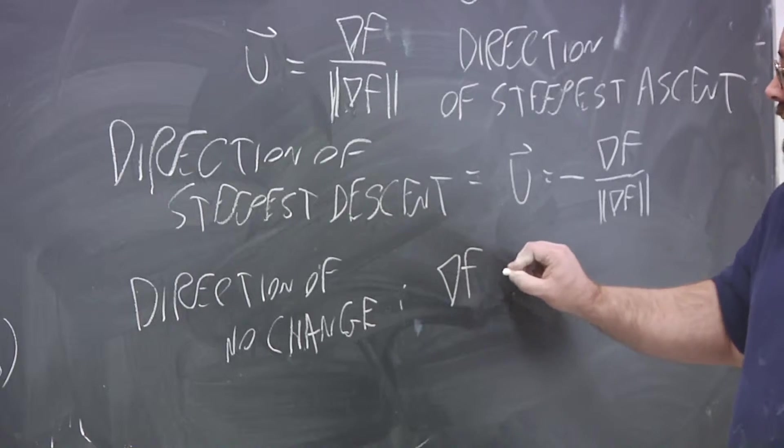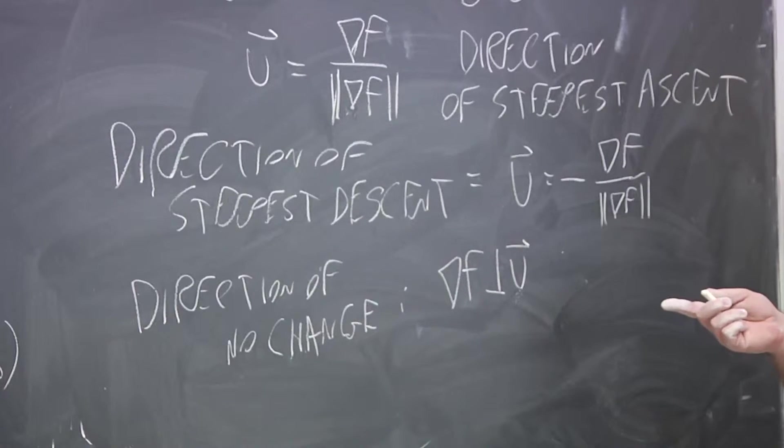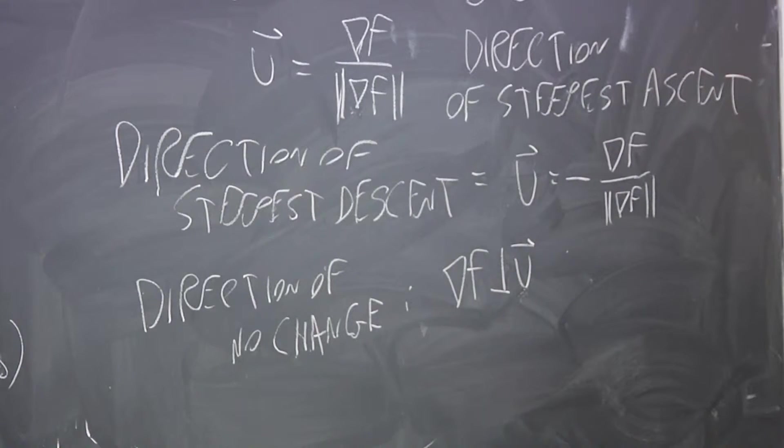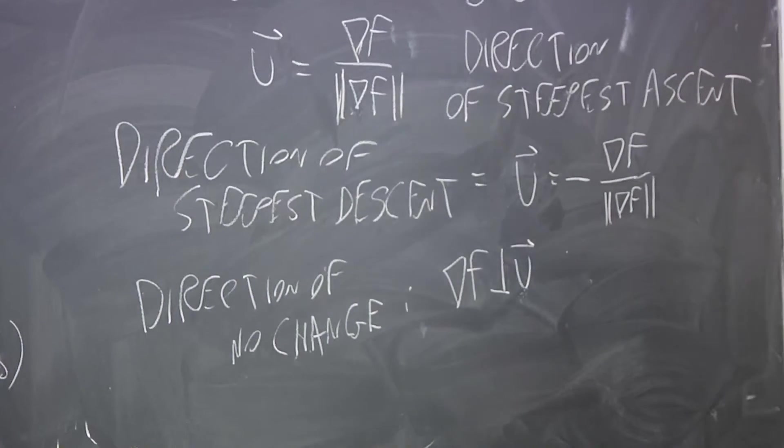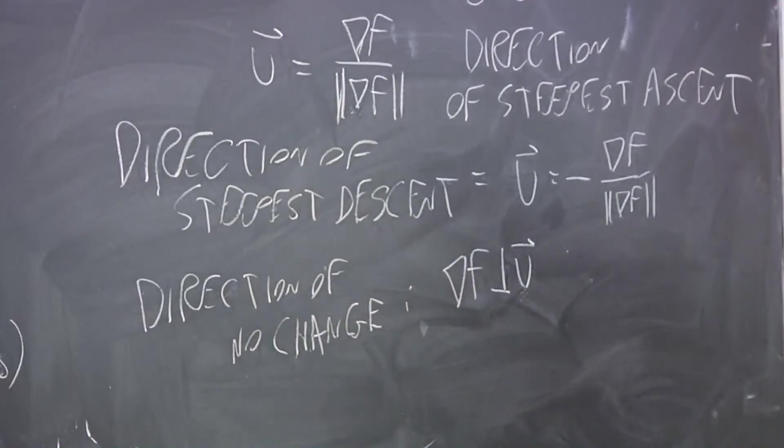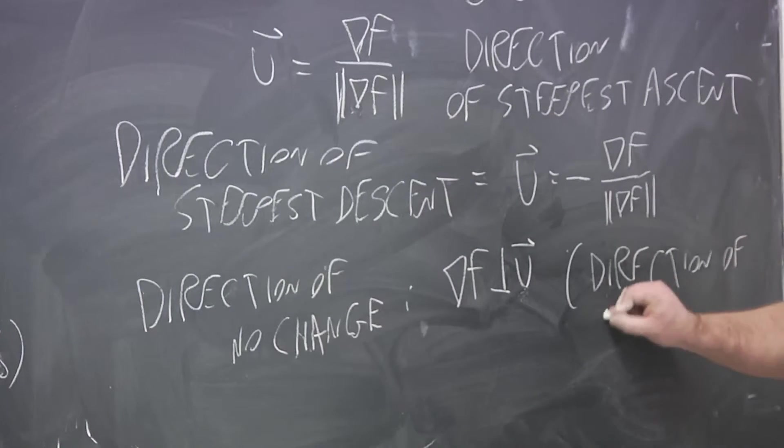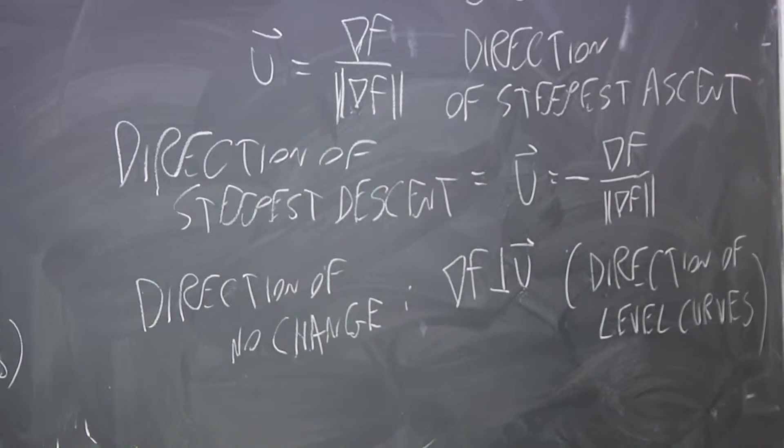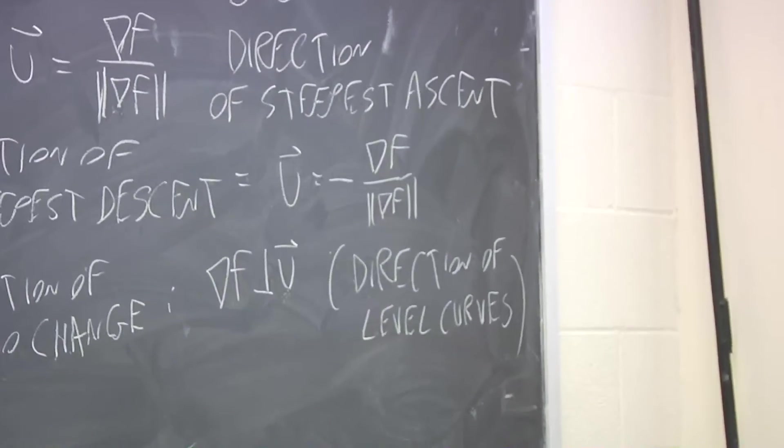So, in other words, if the gradient and u are perpendicular to one another. So, in two dimensions, there's going to be two vectors that are pointing in opposite directions that will fit the bill. But, if you go to more variables, you have infinitely many directions that will do this. So, what that means is this gives you an idea of where the level curves go, what direction they go from any particular point.